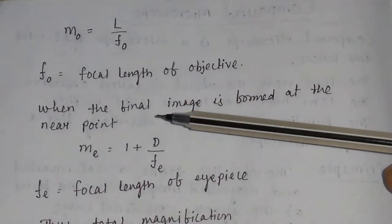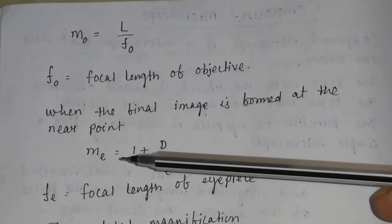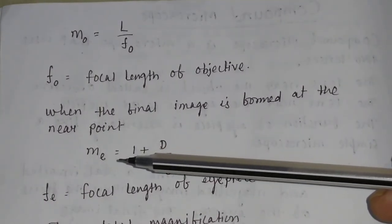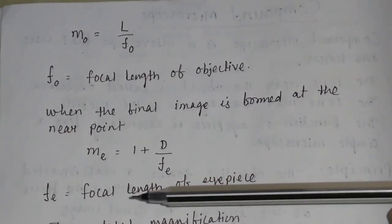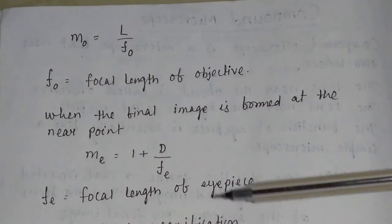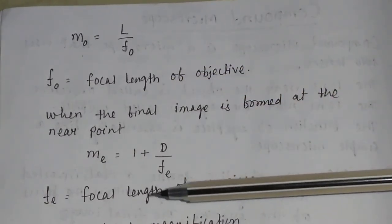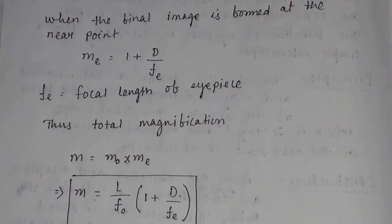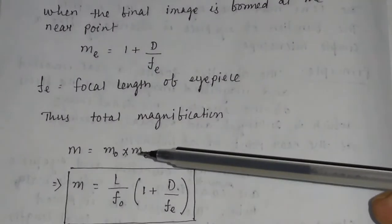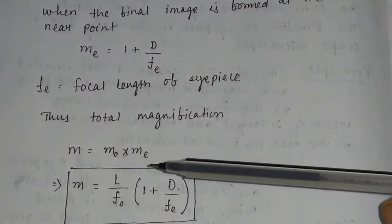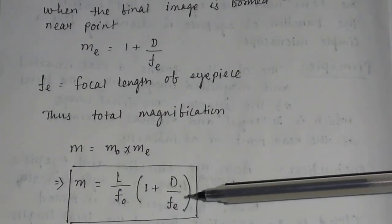When the final image is formed at the near point, the magnification due to the eyepiece, ME, equals 1 plus D/FE, where FE is the focal length of the eyepiece and F0 is the focal length of the objective. So the total magnification M equals M0 × ME, giving M = (L/F0) × (1 + D/FE).